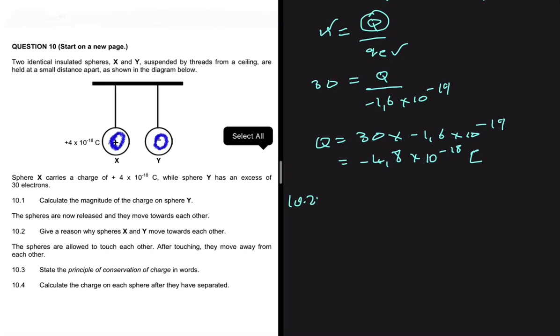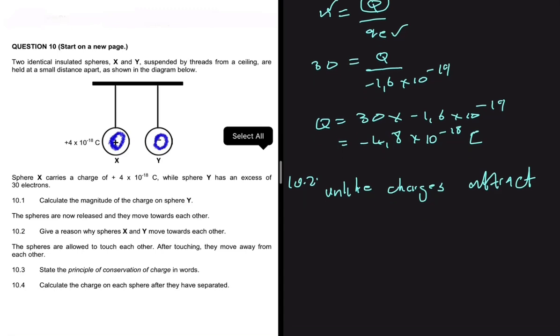And then we know fully well that unlike charges attract. So the reason X and Y are going to move towards each other is because unlike charges attract. If they were like charges, they were going to move away from each other because like charges repel.